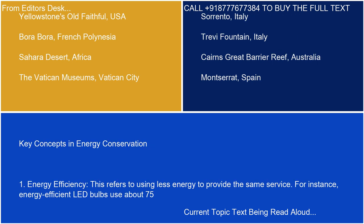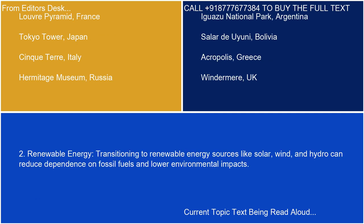Key Concepts in Energy Conservation. Energy Efficiency refers to using less energy to provide the same service — for instance, energy-efficient LED bulbs use about 75% less energy than traditional bulbs. Renewable Energy: Transitioning to renewable energy sources like solar, wind, and hydro can reduce dependence on fossil fuels and lower environmental impacts.